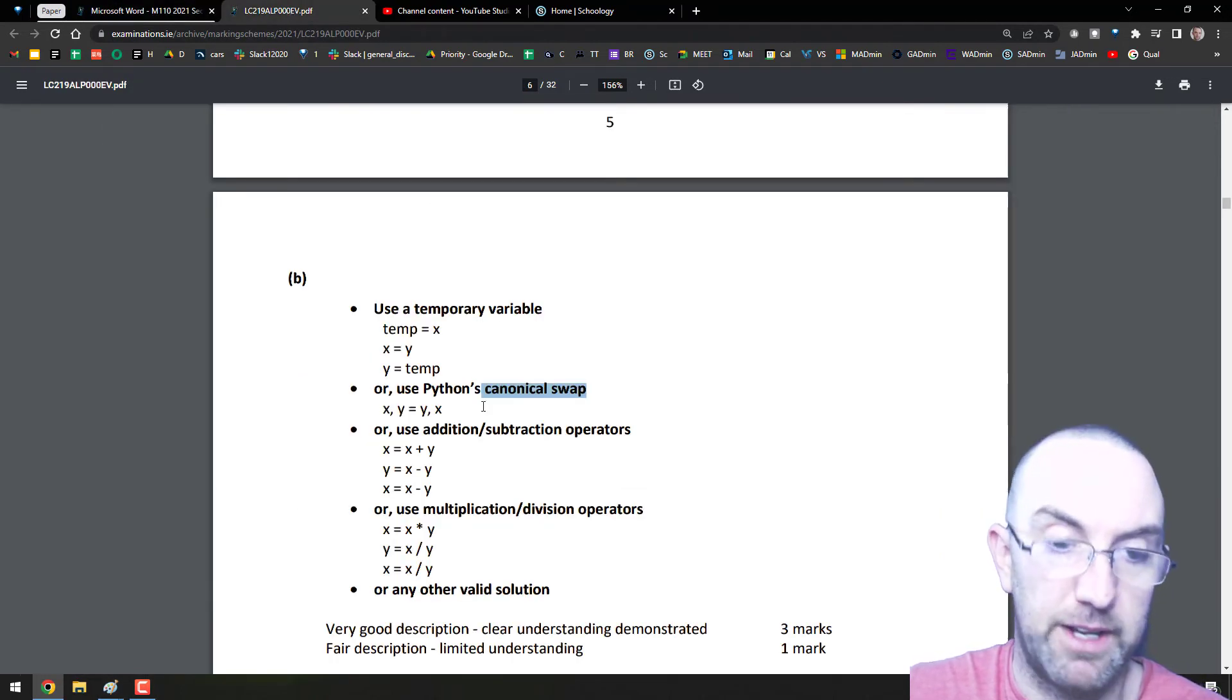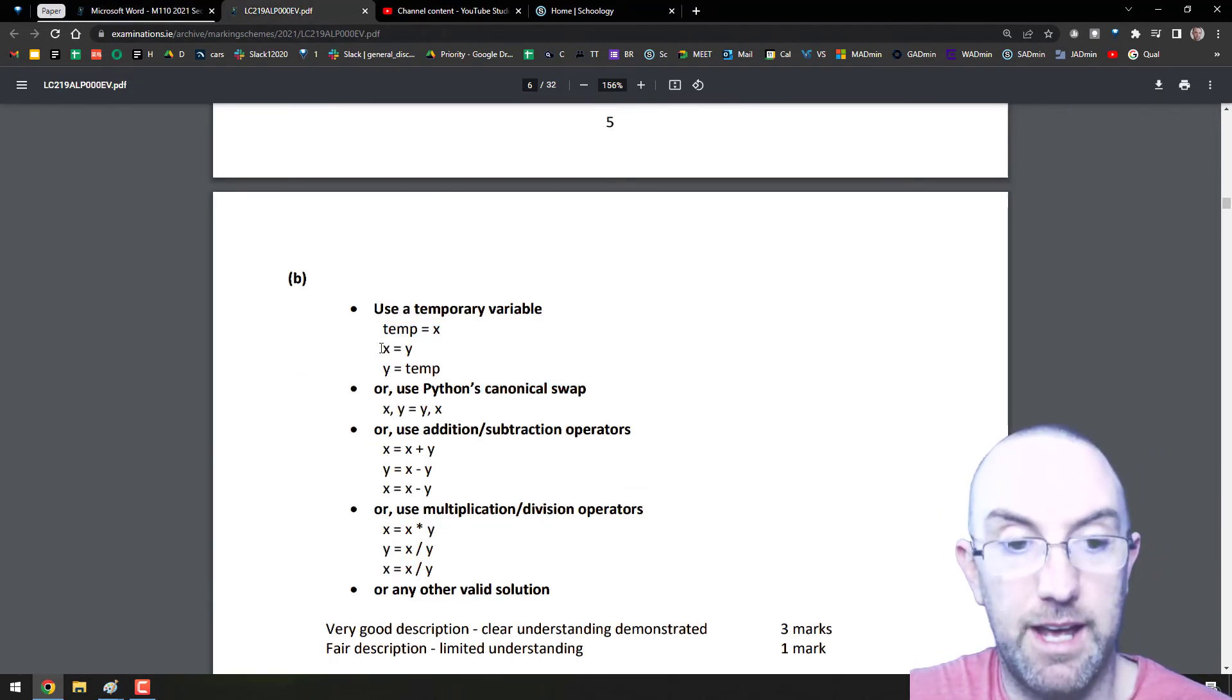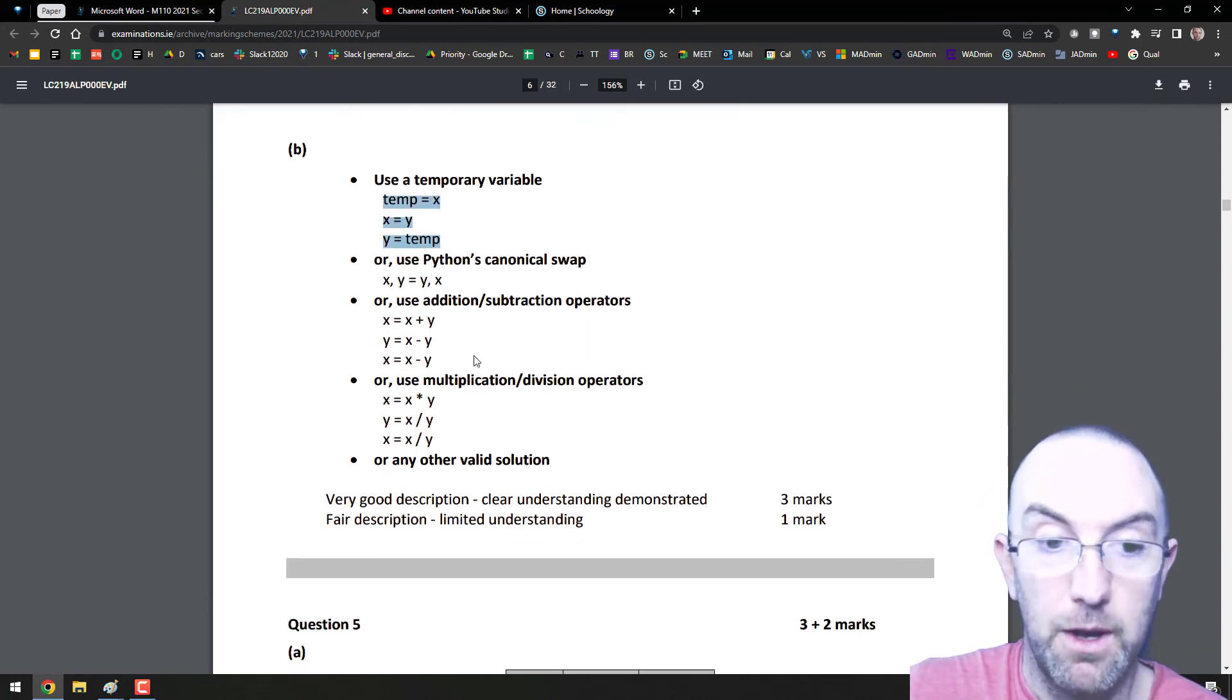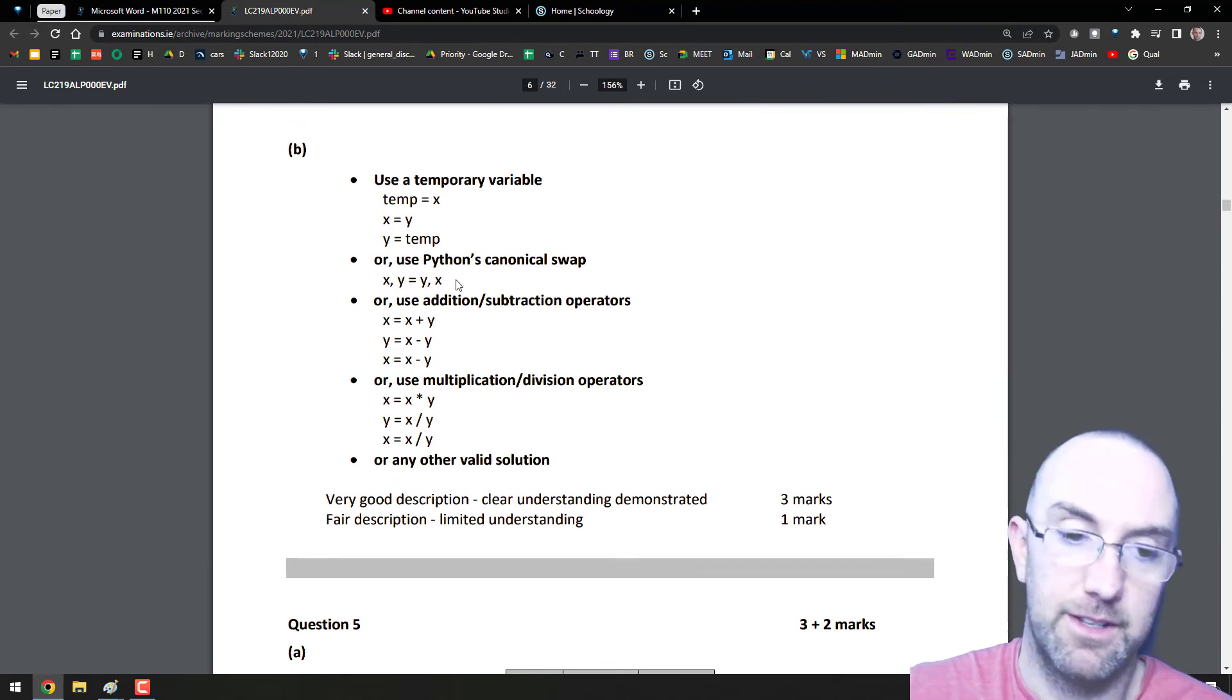Part B was describe a method that does work. You can do this really cool little swappy thing. You can do the temp equals x, x is y, y, that's what we did in Paint, right? But I love that you can do this in Python: x, y equals y, x with commas. I don't know if you can do that in JavaScript. It's a cool switcheroo.